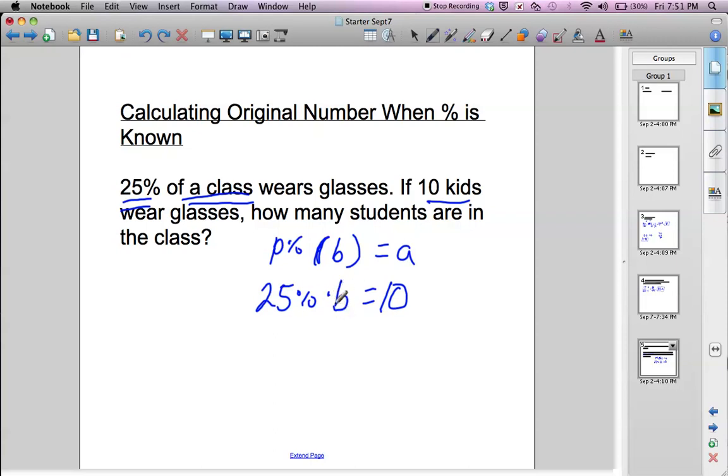So in this equation, we want to find out what the original number is or the size of the class. We have to solve for B. So we have to get rid of this here. This is 25% times B, so we do the opposite of times. We divide both sides of the equation by 25%. So we get B equals 10 divided by 25%.